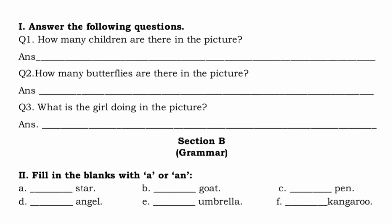The first question is: how many children are there in the picture? We had seen that there was just one girl who was watering the plants. So the answer for this question will be 1. Students, you can write the complete sentence — that there is one child in the picture — or you can give the answer in one word also. And in case you don't know the spelling of 'one', you can even write the digit for it.